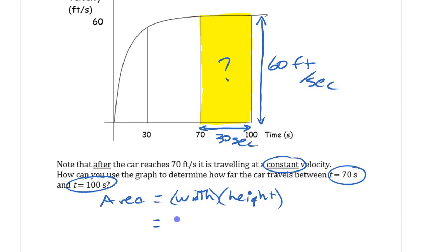The width is the time, 30 seconds. And the height is this rate, this constant rate. In this case, it's velocity, which is a rate of position to time.